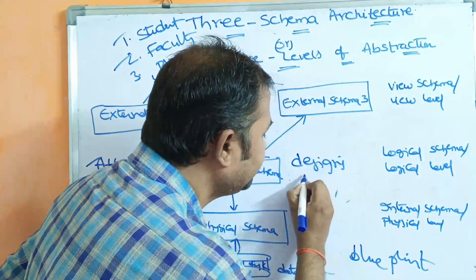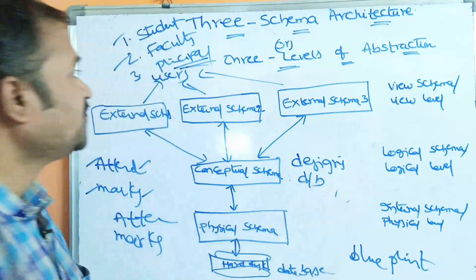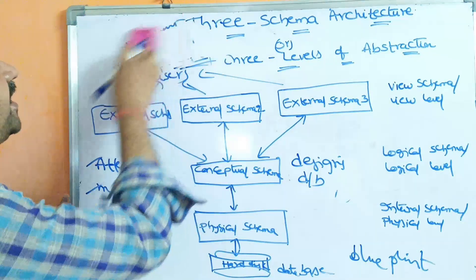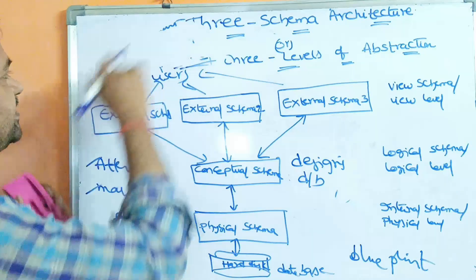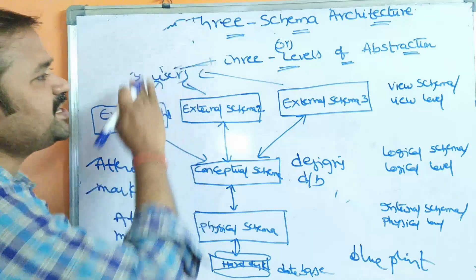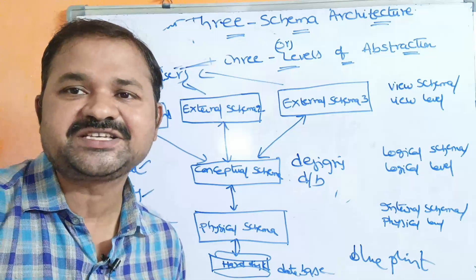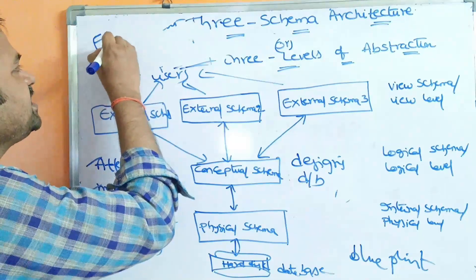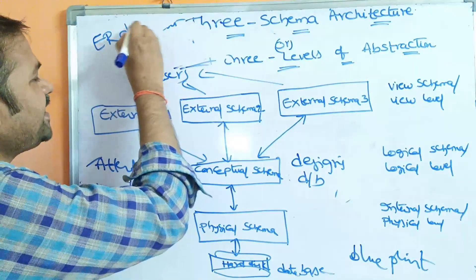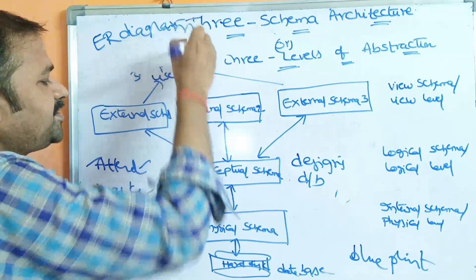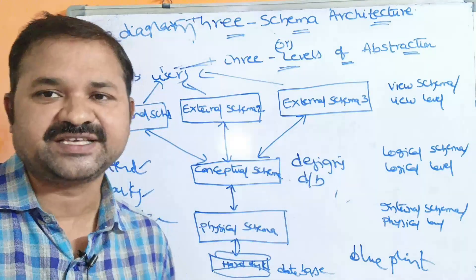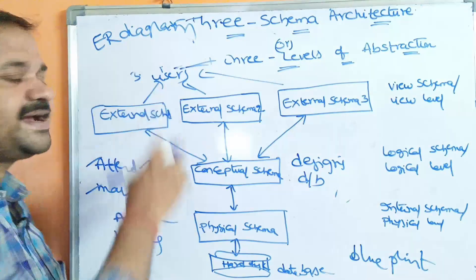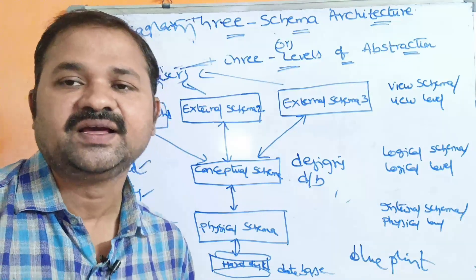For designing databases, mainly we use an ER diagram in RDBMS. Nowadays we are using Relational Database Management System (RDBMS), and in RDBMS the ER diagram is useful in order to design the database. Here E stands for entity and R stands for relationship.